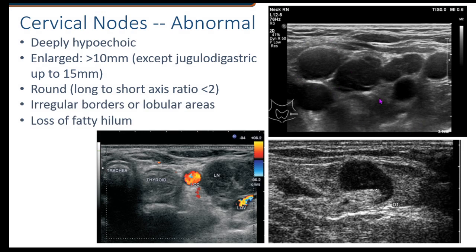Here we have a very rounded appearance to these lymph nodes — they look very abnormal. We cannot make out the hilum too well on this one. This one still has a little bit of its shape, but look how rounded and how deeply hypoechoic these lymph nodes have become. Looking at this lymph node down here — it still has a hilum, but look how thickened this cortex has gotten. This would be very suspicious for metastasis, that there is some cancer inside this lymph node. There seems to be another abnormal lymph node over here as well, but this one is really grossly abnormal with that thickening of the cortex.